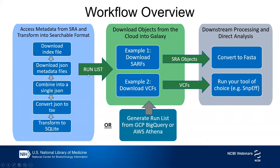The result of that will be a list of runs that we're interested in, and we'll use that in the second step to download the data objects from the cloud into Galaxy. We've got two examples: we're going to download the aligned read objects and convert those to FASTA in Galaxy, and we're also going to download the VCF files and show that you can run your tools of choice — we're going to use SnpEff as an example.